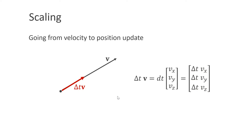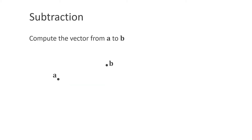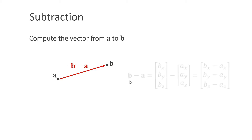What's important to notice is that the scaled vector has the same direction as the original vector. A third operation is subtraction. We can use this to compute the vector from position a to position b — we subtract a from b, performing the subtraction on all components individually. Note that to compute the vector from a to b, we subtract a from b and not b from a.